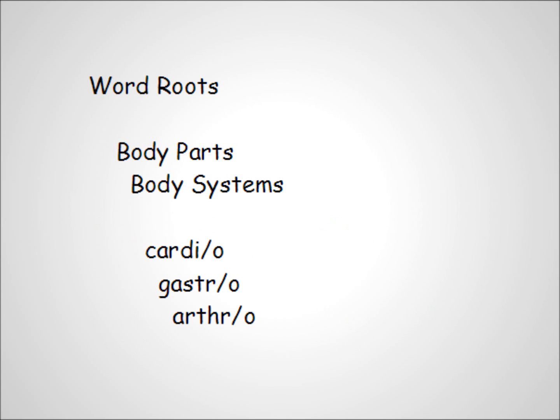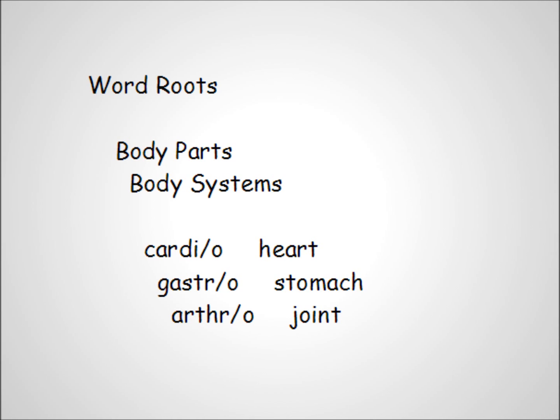Word roots describe things, as in body parts and systems. Examples include cardio, gastro, and arthro, meaning heart, stomach, and joint.